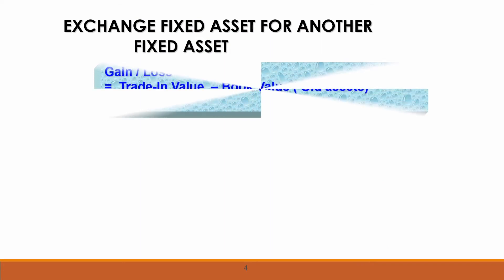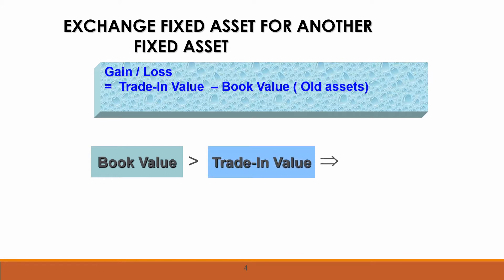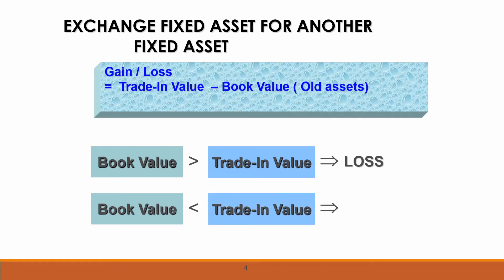When we want to exchange or trade in a fixed asset for another fixed asset, we must calculate gain or loss. We do this by comparing the trade-in value with the book value. If book value is greater than trade-in value, we get a loss on disposal. If book value is less than trade-in value, we get a gain on disposal.